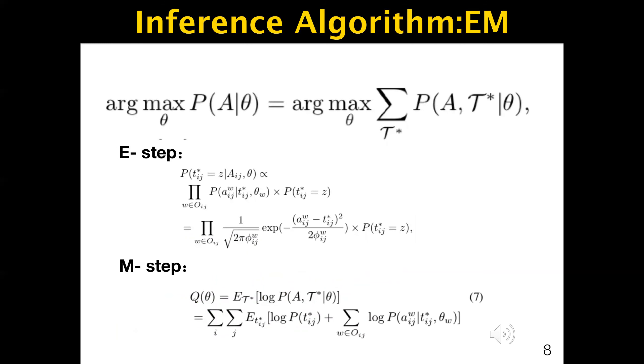Then given the worker model, we now focus on how to infer the final truth. We conduct this using the EM algorithm. In the E-step of the EM algorithm, given the values of θ and the observation A_ij, we compute the posterior probability of the hidden variable t* as follows. In the M-step, given the estimated distribution of truth t_ij star, we compute the optimal values for parameter θ so that the expectation of the log likelihood is optimized. Then these two steps are conducted iteratively to compute the final answers.